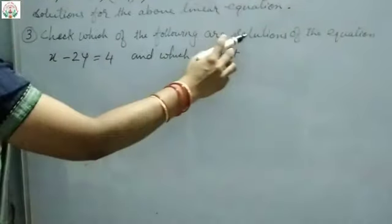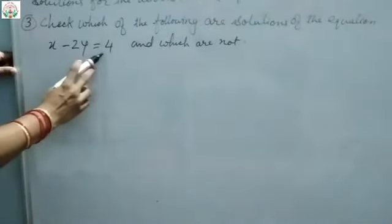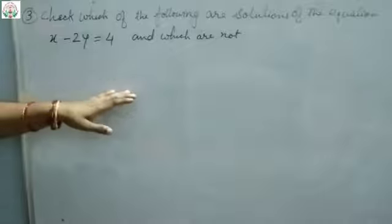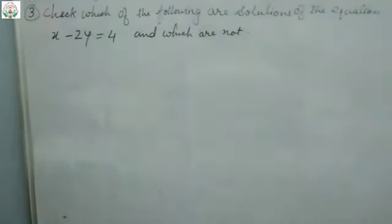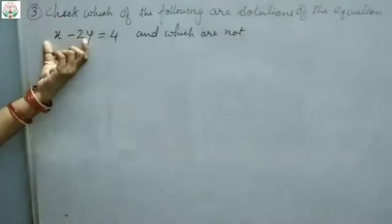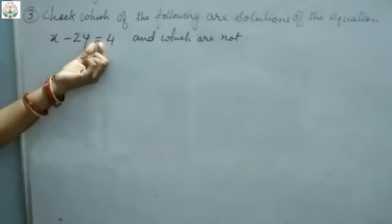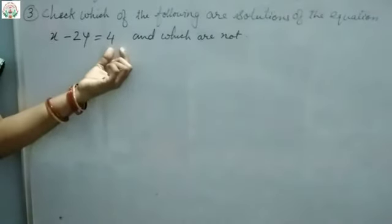Please check which of the following are solutions of the equation x minus 2y equals 4 and which are not. In the question you might have seen 4 sub-questions. Solutions' x values and y values we will put in this particular equation and check the left-hand side value. Is it equal to the right-hand side value? In an equation, the left-hand side value must be equal to the right-hand side value.